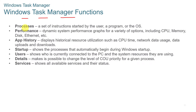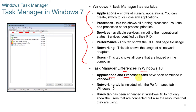The Windows Task Manager functions include: Processes, a set of instructions started by the user, a program, or the OS; Performance, which shows dynamic system graphs for CPU, memory, disk, and Ethernet; App History; Startup, which shows processes that automatically begin during Windows startup; Users; Details; and Services. Windows 7 Task Manager has six tabs. In Windows 10, the application and processes tabs have been combined, the networking tab is included with performance, and the users tab shows both connected users and the resources they are using.